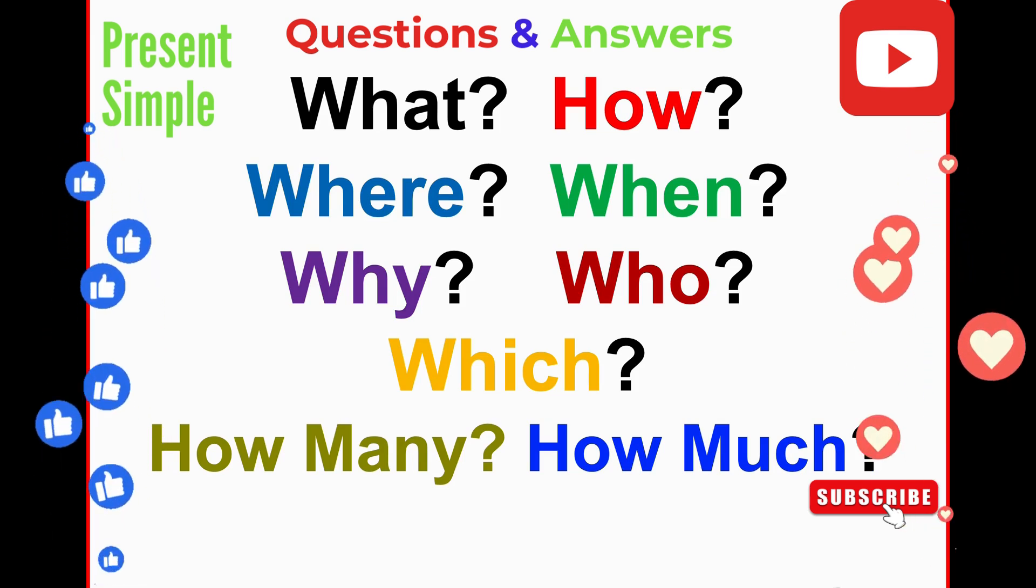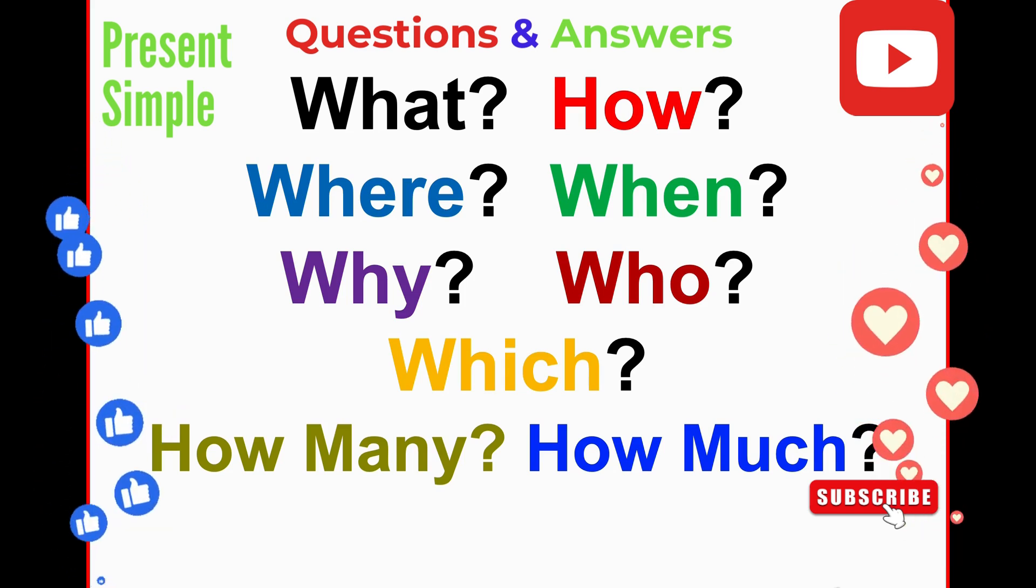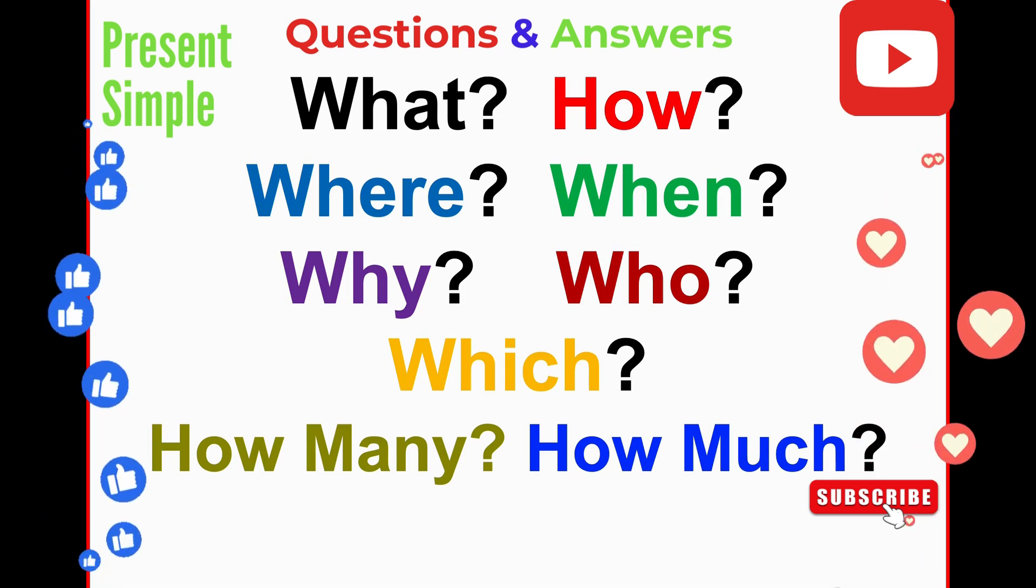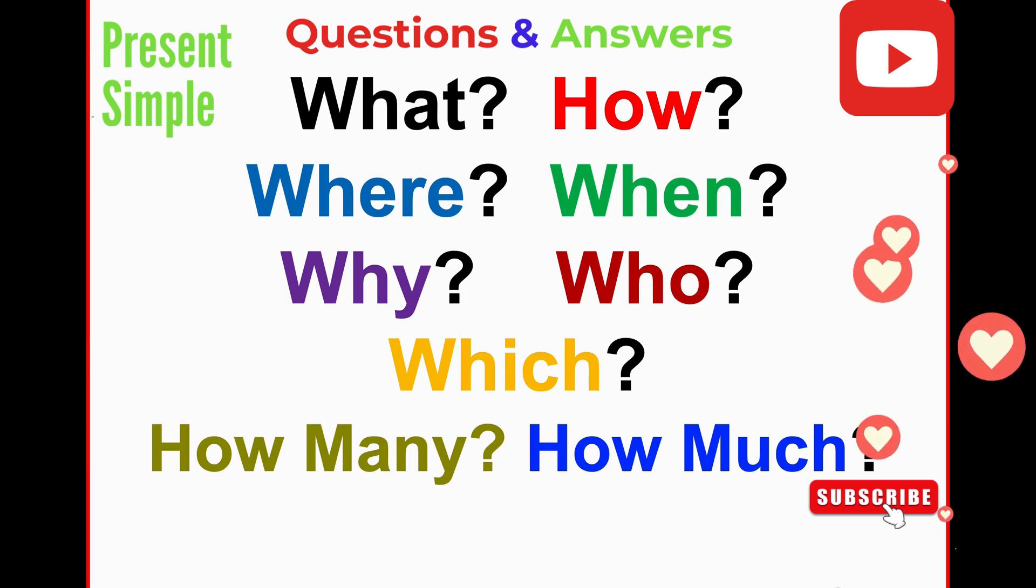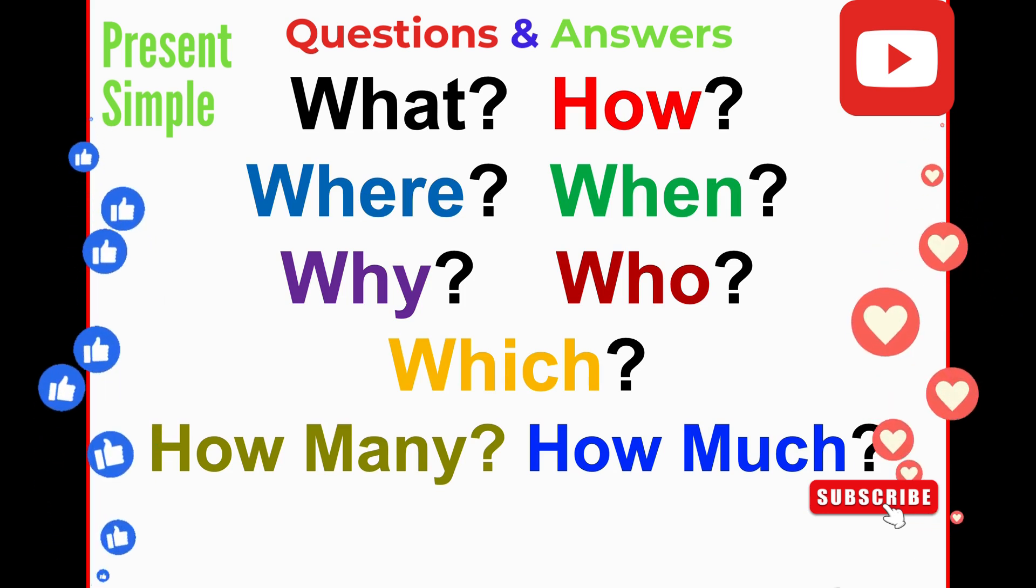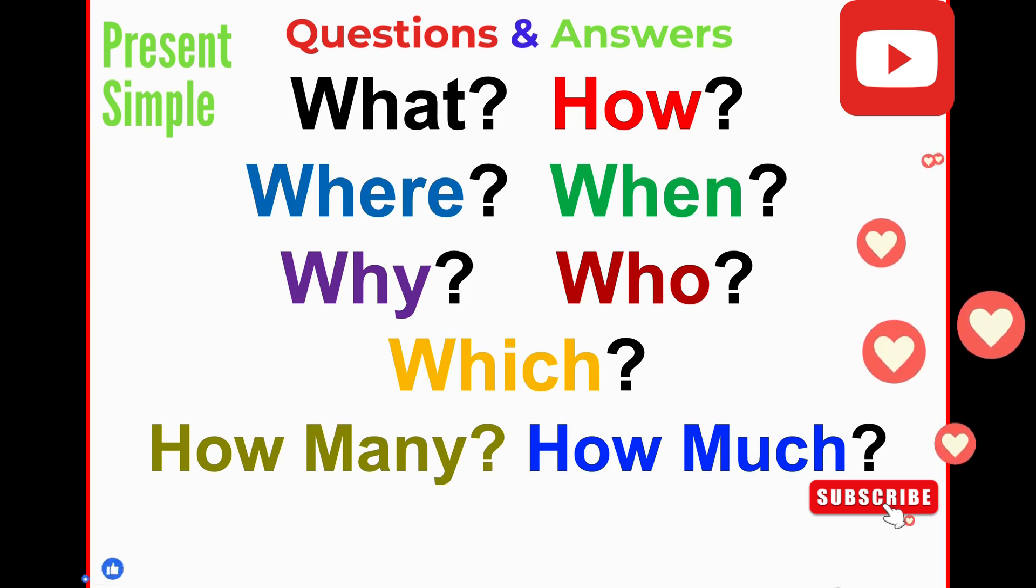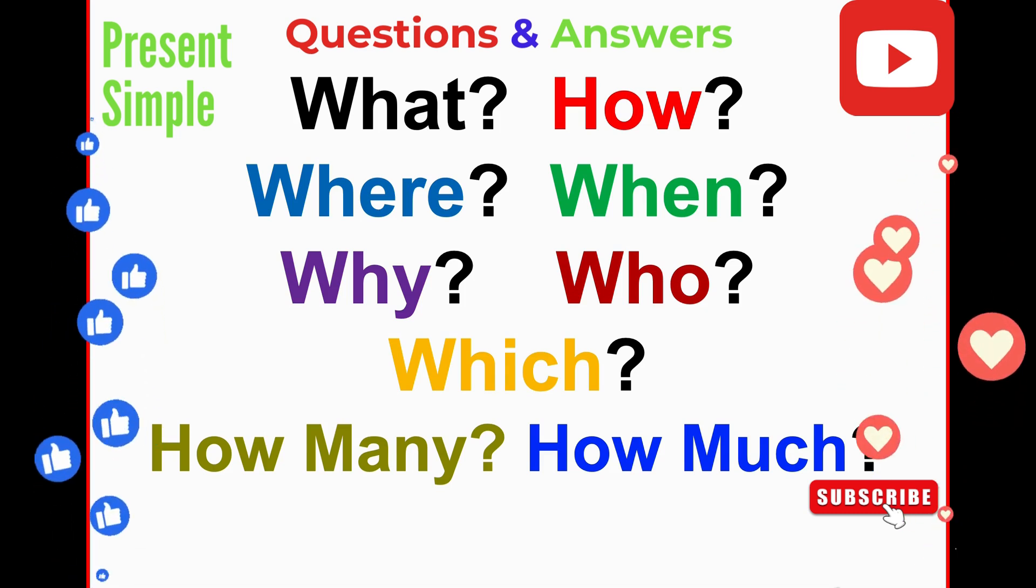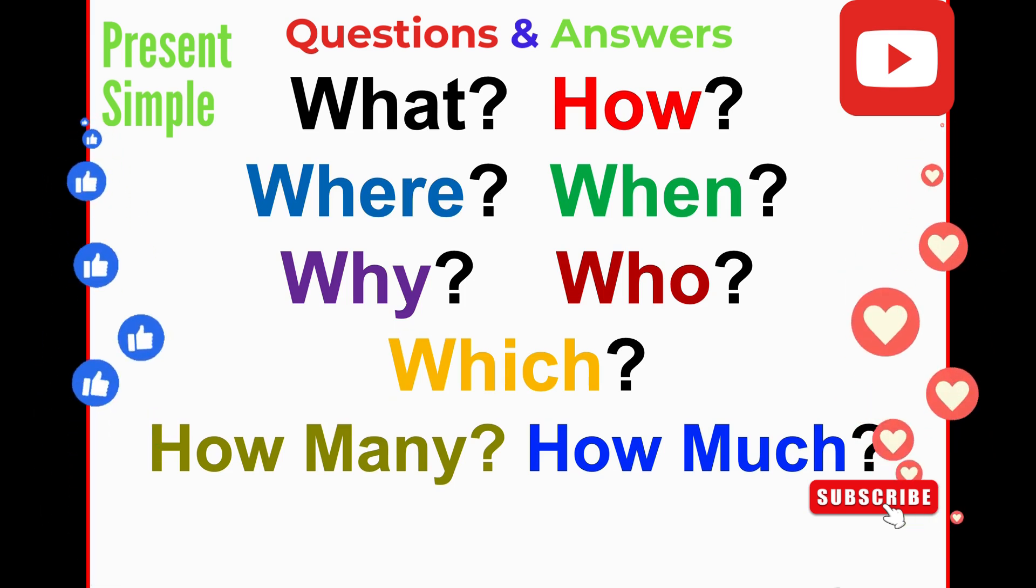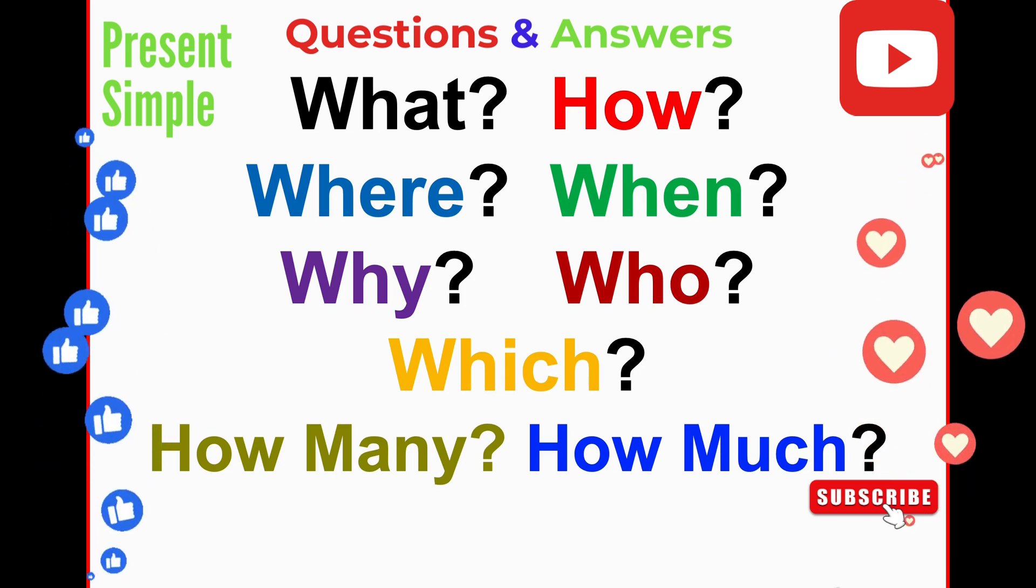For example, what we use for things, how for manners or method, where for places, when for time, why for reason, who for person or people, which when we have a choice between two things, how many when we ask about number, and how much when we ask about quantity or price.